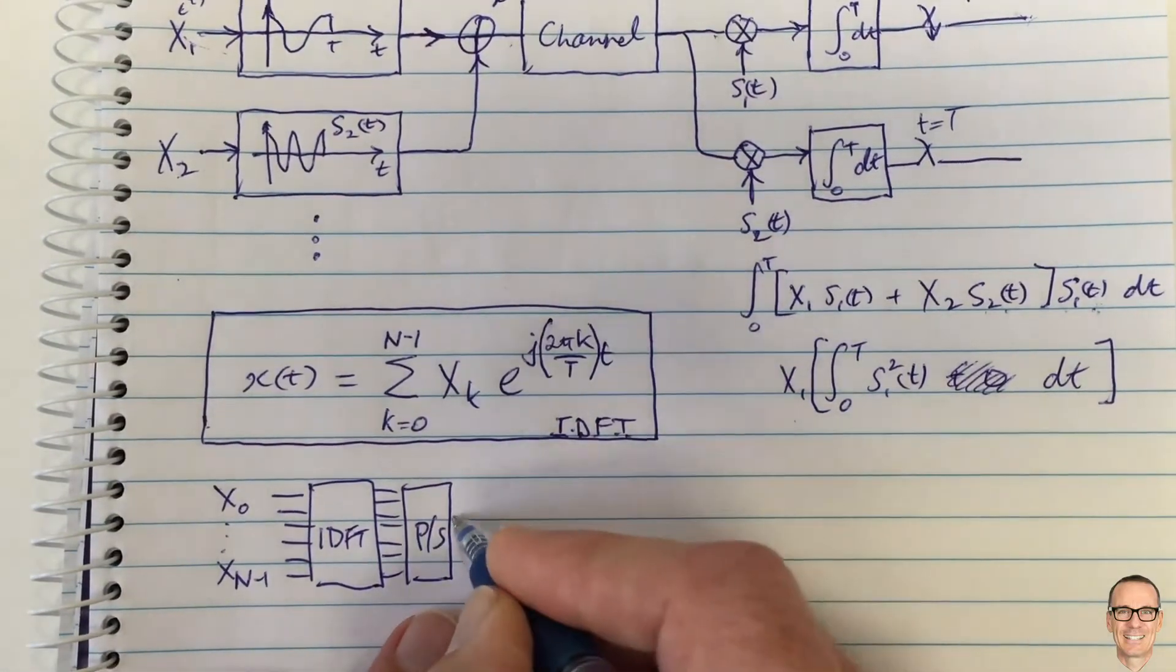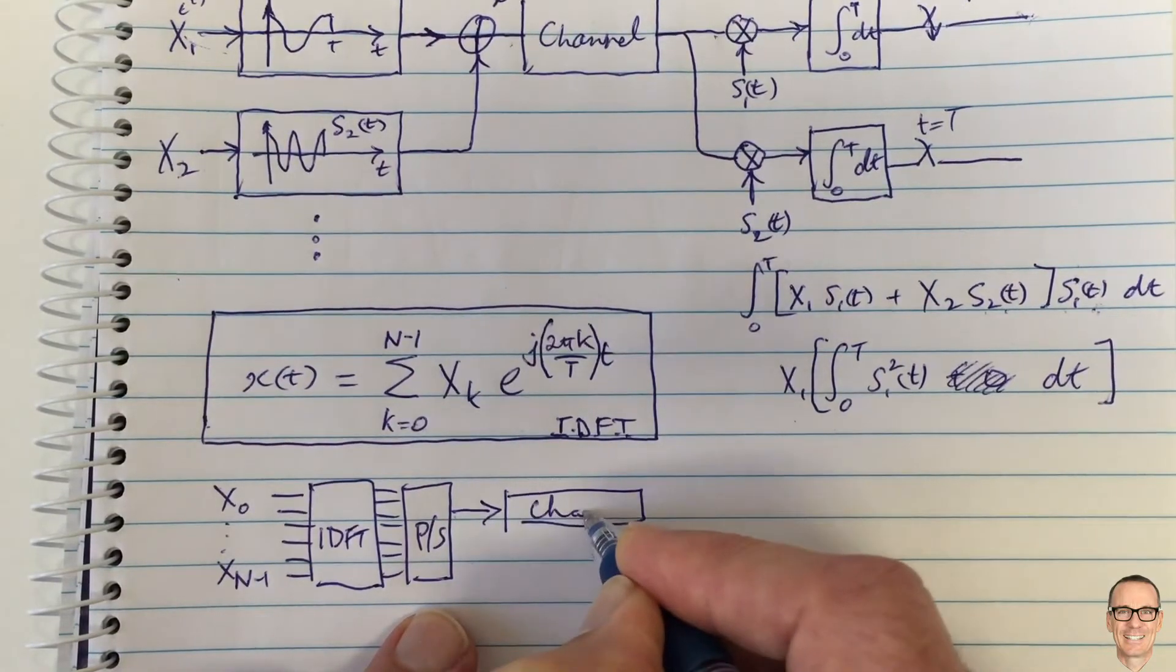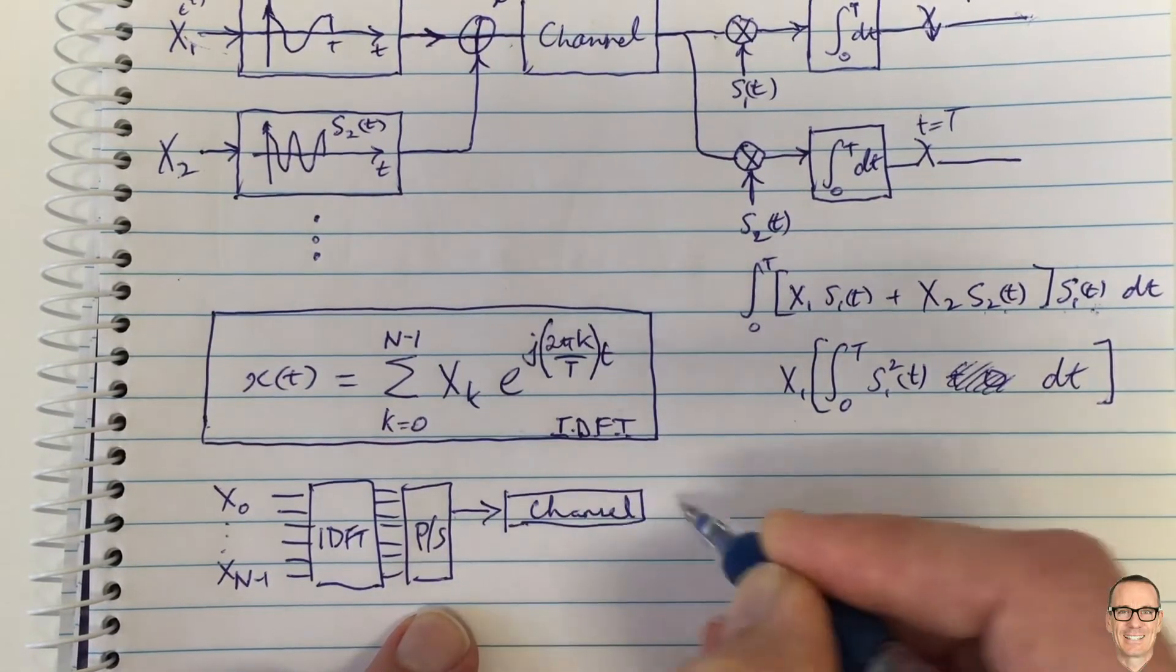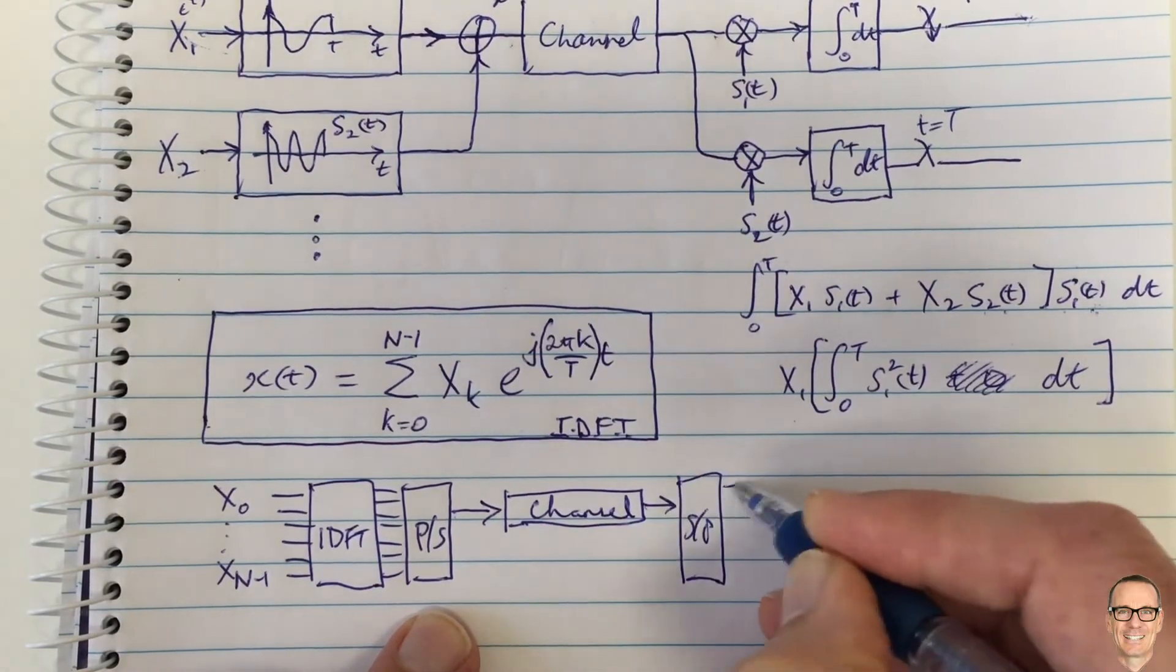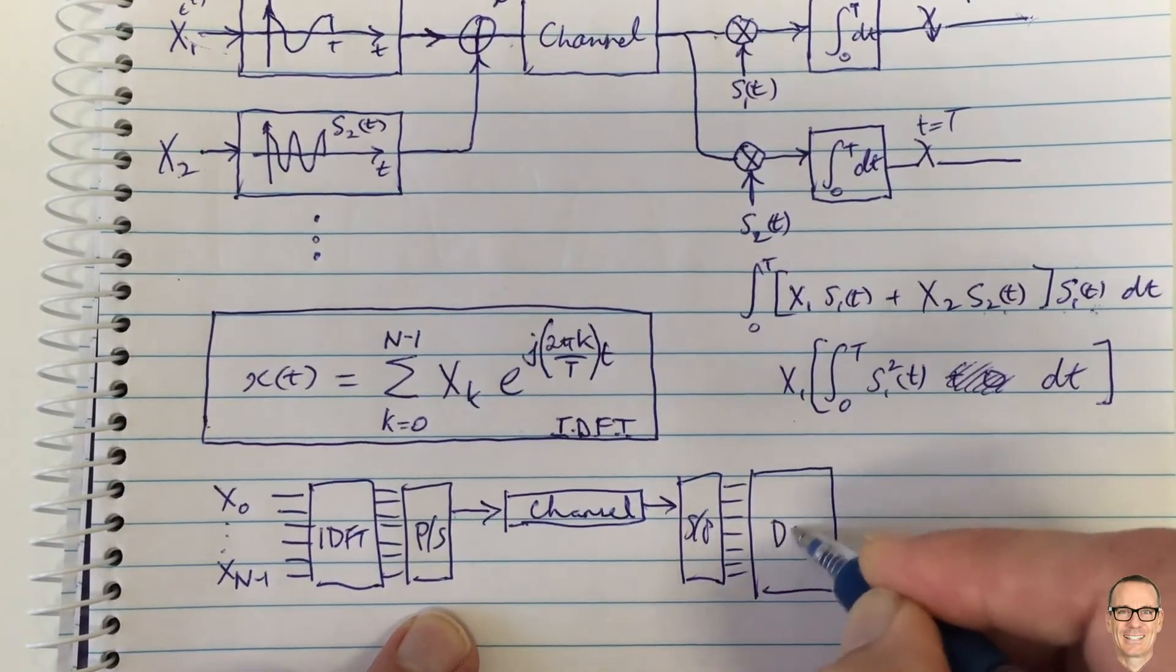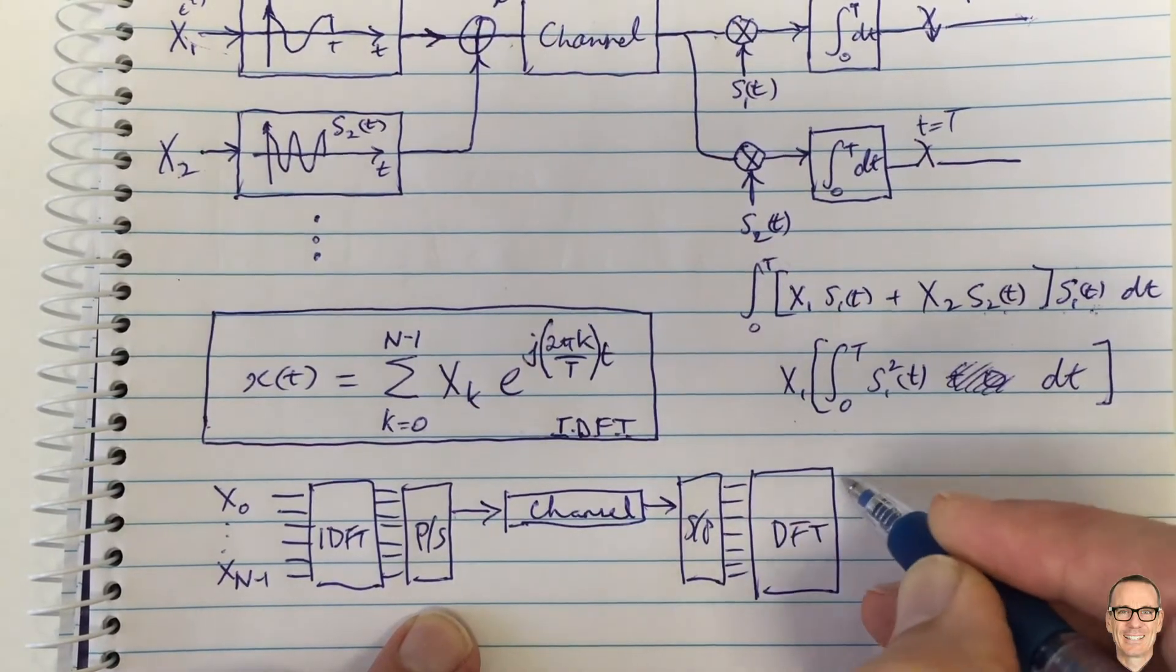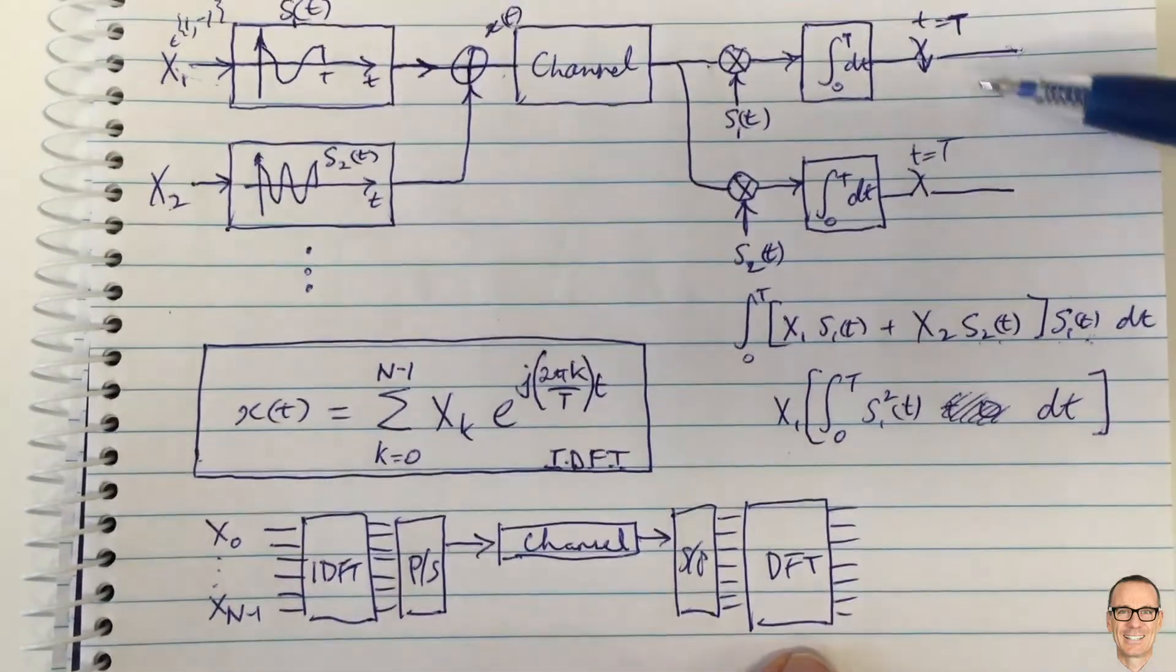Which then goes into the channel. And then at the output we just have the serial to parallel and going into a discrete Fourier transform to give us back our output, each of our output streams, each of these output streams over here.